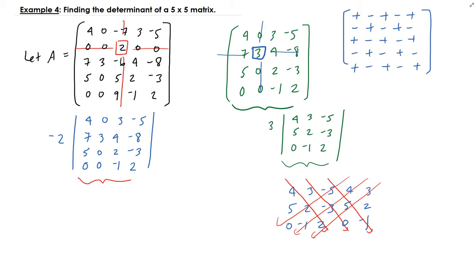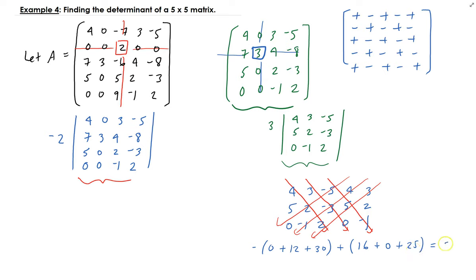Remember that we subtract the second set of diagonals from the first. Going down the positive diagonals: four times negative three times negative one gives positive 12; two times five times three gives 30. Then the other terms: four times two times two gives 16; zero here gives 0; and negative five times five times negative one gives positive 25. Adding those up, we get negative one.